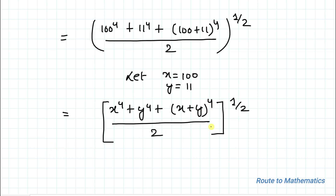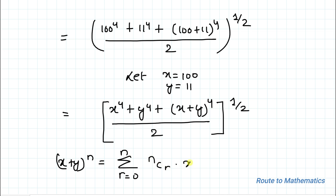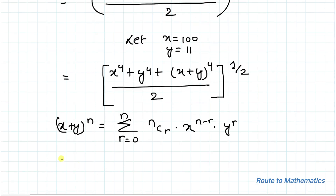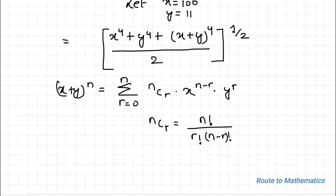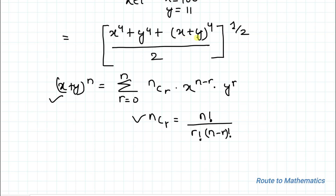We'll expand this using the binomial theorem. The binomial formula states that (x + y)^n equals the summation from r = 0 to n of nCr × x^(n−r) × y^r, where nCr equals n! divided by (r! × (n−r)!). Using these formulas, let's expand (x + y)^4.